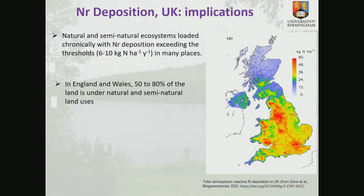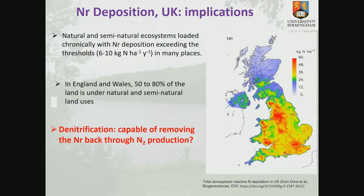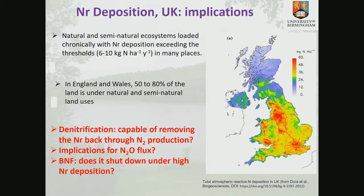There are now some decreasing trends for nitrogen depositions in the UK, but it's still high in many places above the critical thresholds for ecological resilience of 6 to 10 kg of nitrogen. This is critical because in England and Wales alone, land use types that are natural or semi-natural — peat, moorlands, forests, and grasslands — constitute 50 to 80 percent. This raises the question: is denitrification capable of removing this deposited nitrogen, and what are the implications for nitrogen oxide and biological nitrogen fixation?